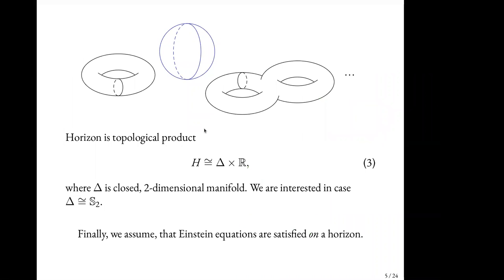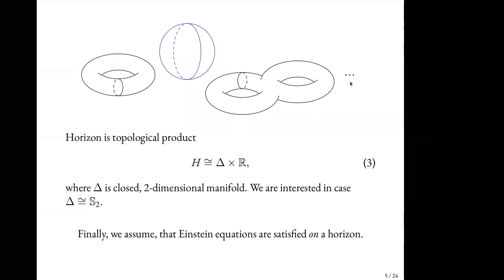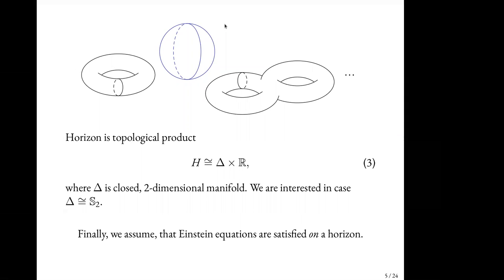Now, we'll assume that H is the topological product of some two-dimensional closed manifold delta and R. These are the geodesics generated by L. Delta can be any closed two-dimensional manifold: sphere, torus, two-torus, n-torus. For the reasons I will explain later, I will be concerned with delta being a topological sphere. Moreover, we'll assume that Einstein equations are satisfied on the horizon.